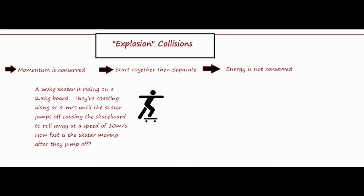Explosion collisions are basically collisions where things start together and then they separate. In a lot of cases we'll have two objects that are at rest, both with a velocity of zero, that push away from each other and separate into opposite directions. In the case we're looking at, both of the objects are actually moving and then they separate. In these collisions, energy is not conserved.